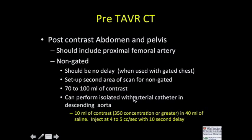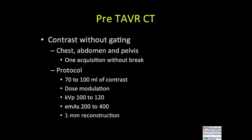In very select individuals considering a peripheral vascular approach, we will image just the pelvic vessels with an arterial catheter placed in the cath lab. We dilute 10 mLs of contrast with 40 mLs of saline and eject at 45 cc's per second off the descending aorta, so the patient receives less than 10 mLs of contrast. For patients with rapid heart rates or in AFib with rapid response, we do a non-gated protocol with a fast pitch to get good evaluation of vascular structures.